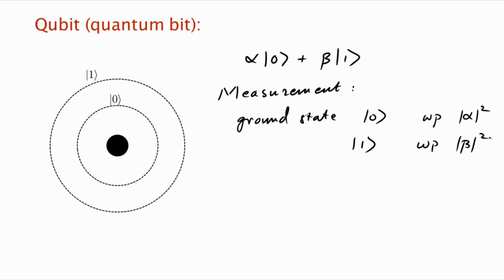That's what the result of the measurement is. When you measure the system, you disturb the state. When you're not looking, the electron is in this superposition of ground and excited. But as soon as you measure it, it quickly makes up its mind, and it goes into either ground or excited with certain probabilities. This is the reason why we wanted the state to be normalized — because these probabilities must add up to 1: |α|² + |β|² = 1.